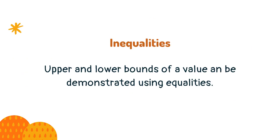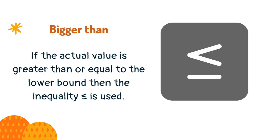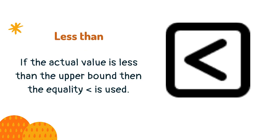Upper and lower bounds of a value can be demonstrated using inequalities. If the actual value is greater than or equal to the lower bound, then the inequality shown should be used. If the actual value is less than the upper bound, then the equality shown is used.